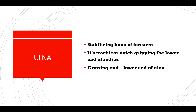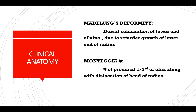Ulna: the stabilizing bone of the forearm. The trochlear notch grips the lower end of the radius. The growing end is the lower end of the ulna. Clinical anatomy — madelung deformity: dorsal subluxation of the lower end of the ulna due to retarded growth of the lower end of the radius. Monteggia fracture is a fracture of the proximal one-third of the ulna along with dislocation of the head of the radius.